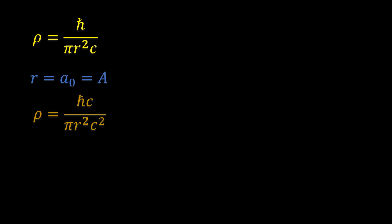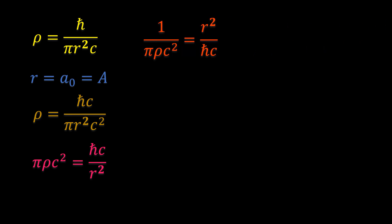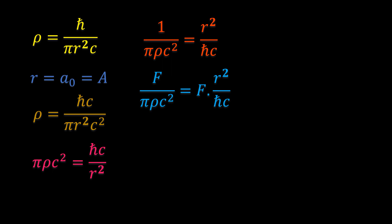We can cross-multiply to have pi times rho times c squared equal to h-bar c over r squared. Inverting both sides of the equation gives this. Let's multiply both sides of the equation by the force that an electron in the first orbit of the hydrogen atom experiences. Writing out the full expression for this force on the right-hand side, the r squares cancel to give this.